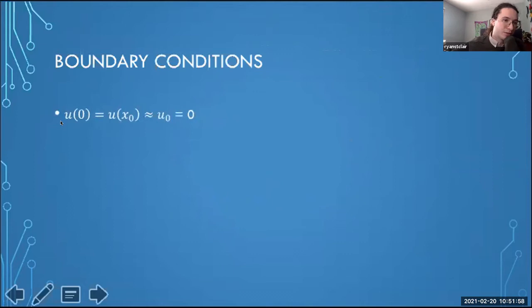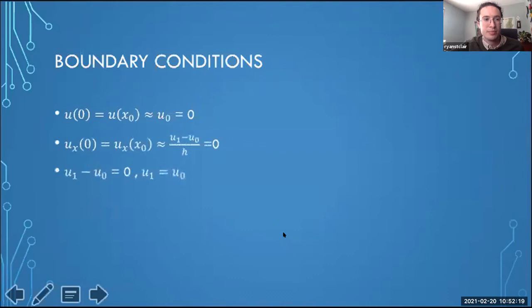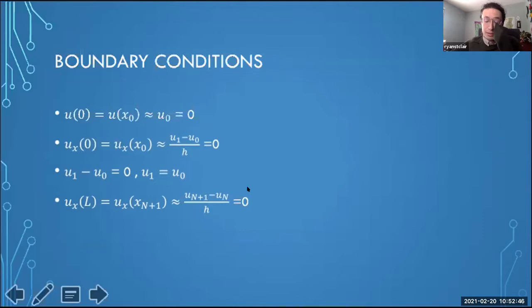For the Dirichlet condition on the left-hand side, u(0,t) = 0 means our state U_0, representing the node at x = 0, is identically zero. For the Neumann conditions, on the left-hand side at x = 0, we approximated using the forward difference between U_1 and U_0, setting it equal to zero. Since H ≠ 0, this implies U_1 = U_0. Similarly, we used a backward finite difference to approximate the Neumann condition at the other end.